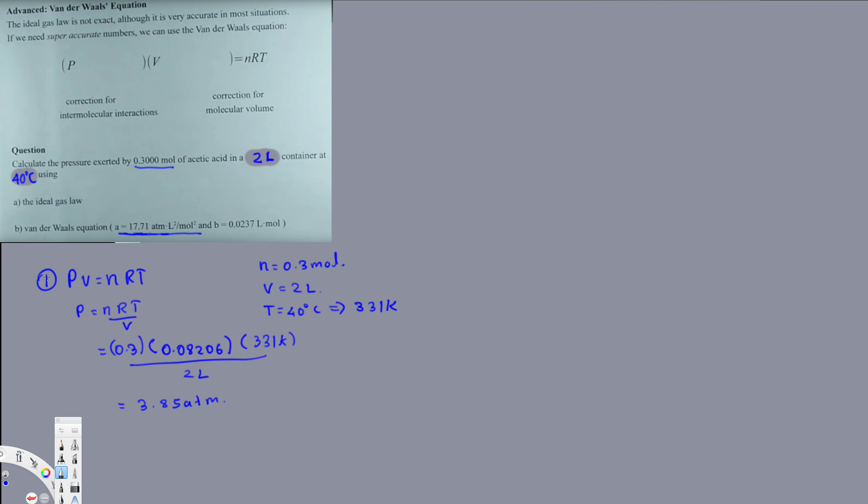The second part is asking, calculate the same pressure using van der Waals equation. Let's see, let's calculate this one using van der Waals equation and see what's the difference. The van der Waals equation is: P plus a n squared over V squared, times V minus nB equals nRT.